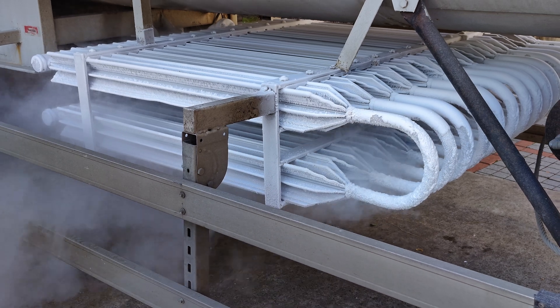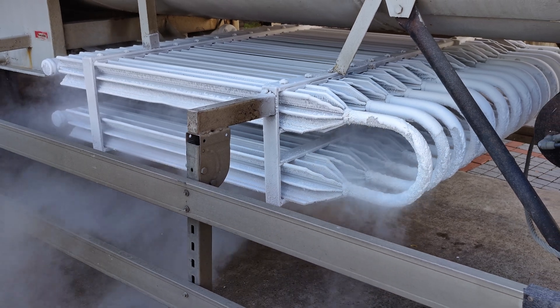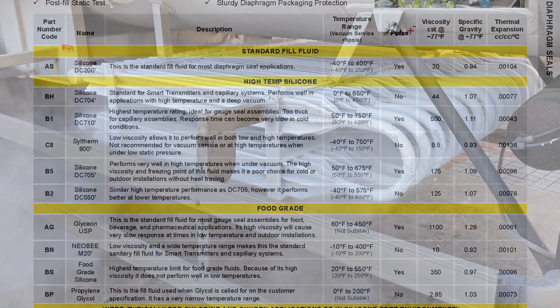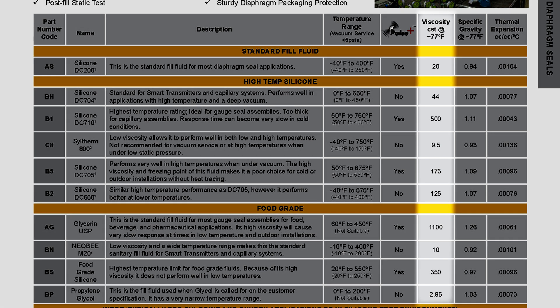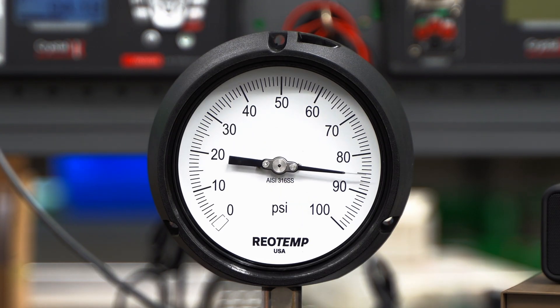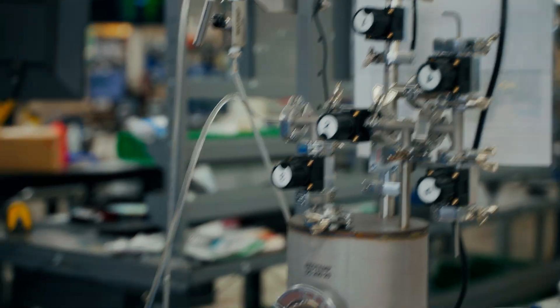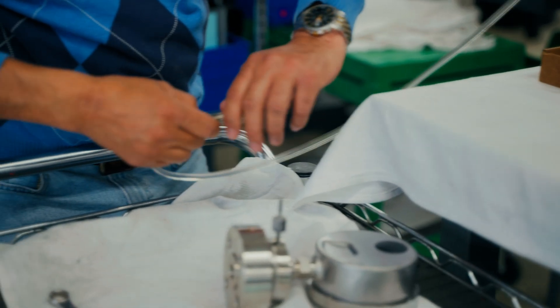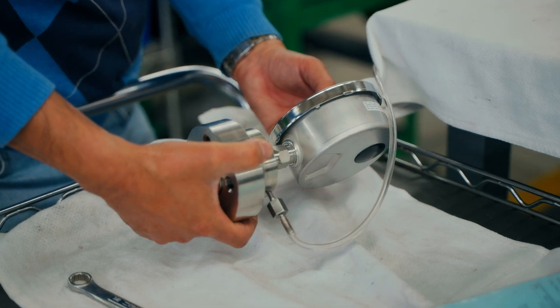Cold process or ambient conditions will slow down response time as the fill fluid gets thicker. Choosing a low centistoke fill fluid and/or one with a low minimum temperature will help the assembly maintain acceptable performance in low temperature environments. Exceeding the minimum temperature of a fill fluid will result in unacceptable response time or temporary failure to measure accurately.